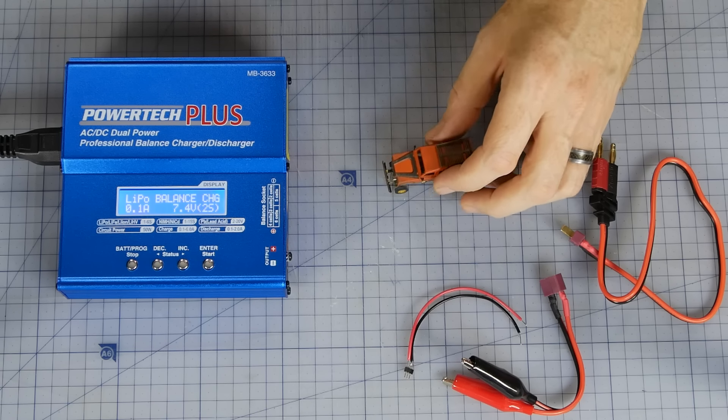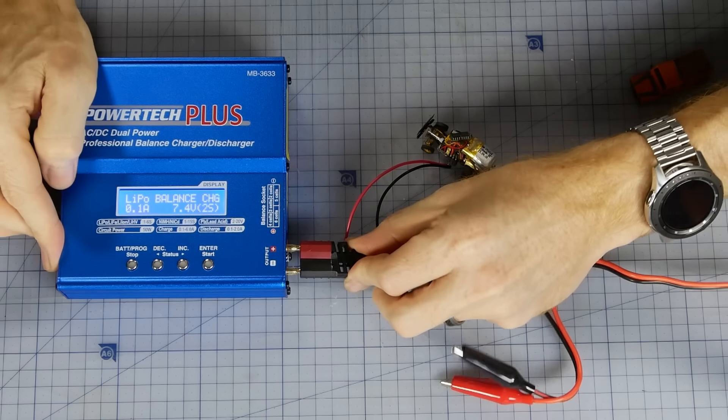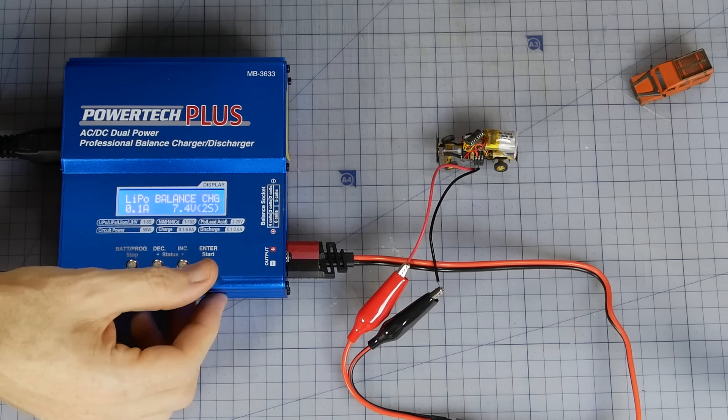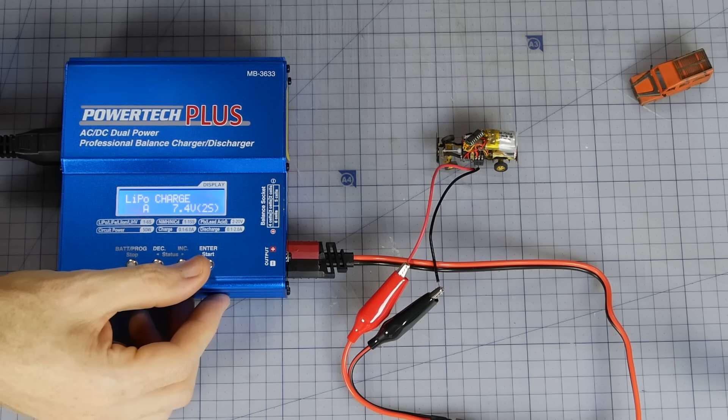And lastly, we need to know how to charge the model. I'm using a pretty standard hobby charger from JCAR. Just make sure your charger is capable of charging a single cell lipo and can charge at 100 milliamp hours. Once you've selected those settings, you can start charging.